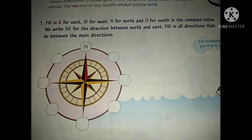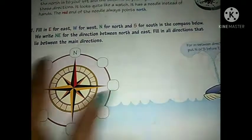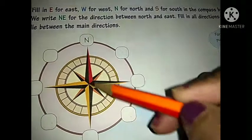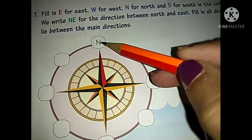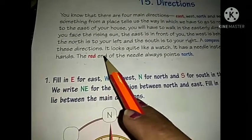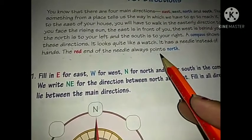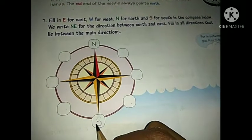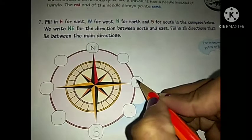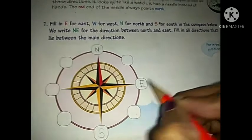On the compass, E is for East, W is for West, N is for North, and S is for South. The red needle is showing up here in the North direction. The red end of the needle always points North. So: E for East, W for West, N for North, S for South. The sun rises from the East direction, just behind is West, your left hand side is North, and your right hand side is South.